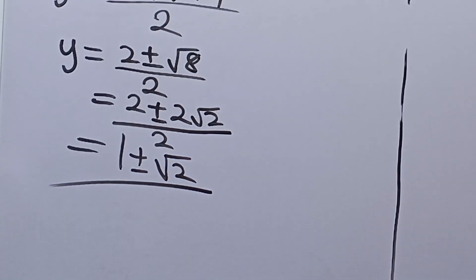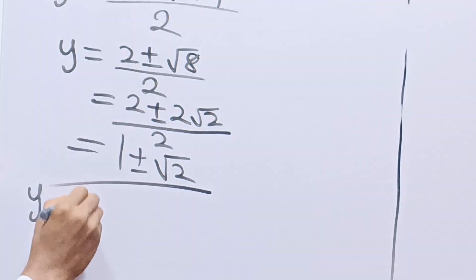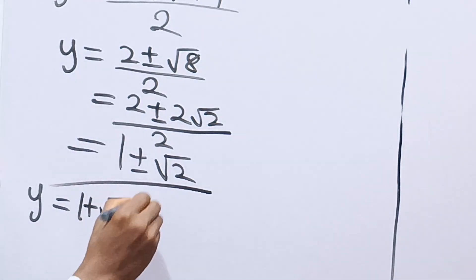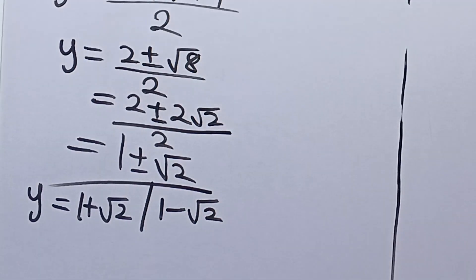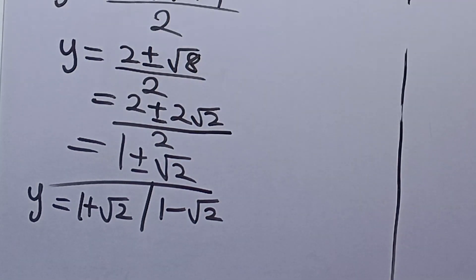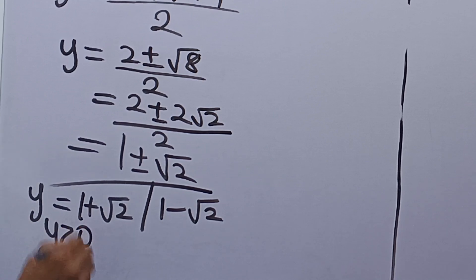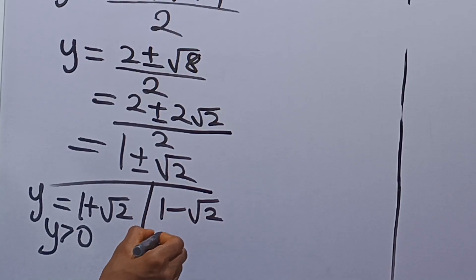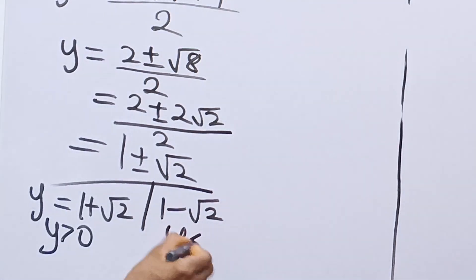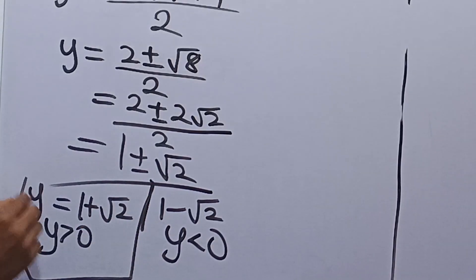So y is either 1 plus root 2 or 1 minus root 2. For y equals 1 plus root 2: root 2 is 1.414, plus 1 gives 2.414, so y is greater than 0. For y equals 1 minus root 2: that is 1 minus 1.414, which is less than 0. Since y equals e raised to the power x must be positive, we take the answer where y is greater than 0.